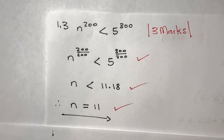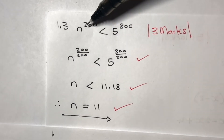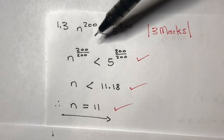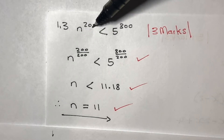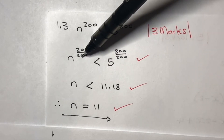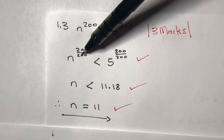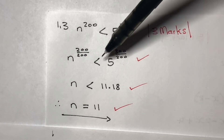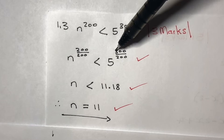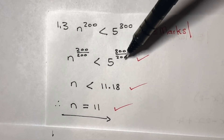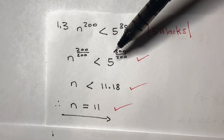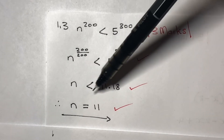On the next step you solve for n. Because you need to get rid of the power, you can divide by exactly the same number — so you've got n to the power 200, that's why you divide by 200. You do the same on the other side of the less than sign, so it becomes 5 to the power 300 divided by 200.